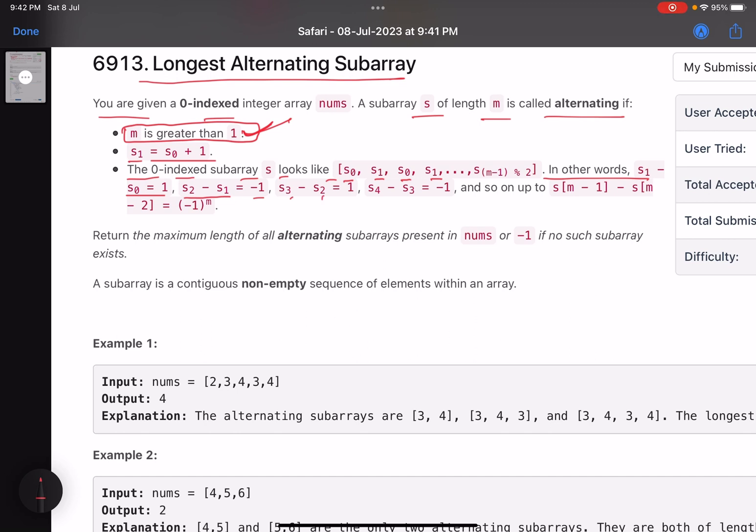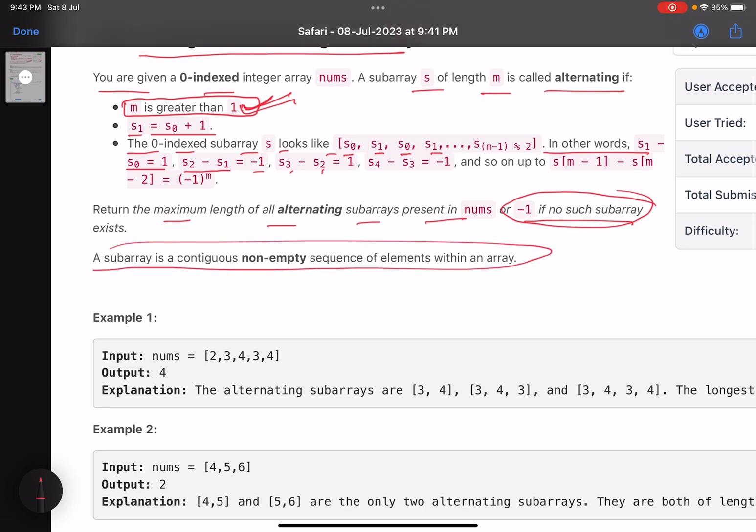Return the maximum length of all alternating subarrays present in nums, or minus one if no such subarray exists. Remember, minus one is when you do not get such a subarray because m has to be greater than one. A single element will not form a subarray in this case. A subarray is a contiguous non-empty sequence of elements within the array.